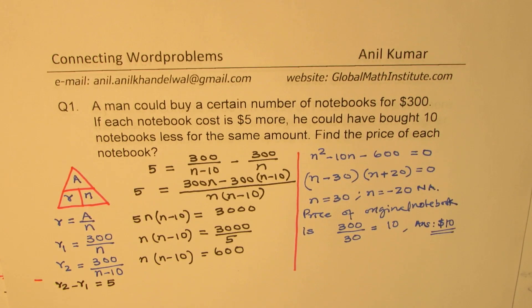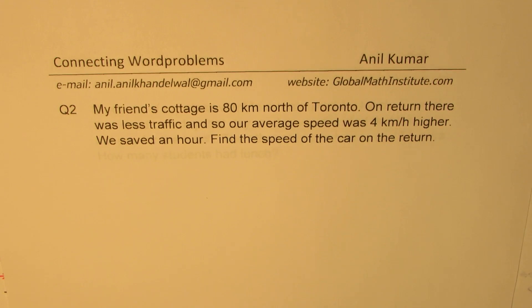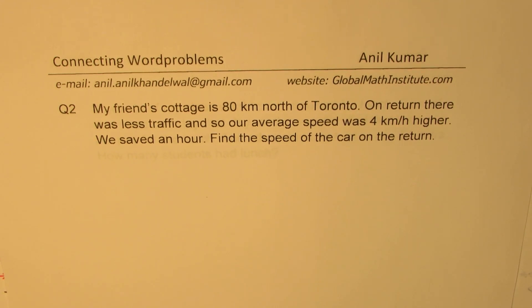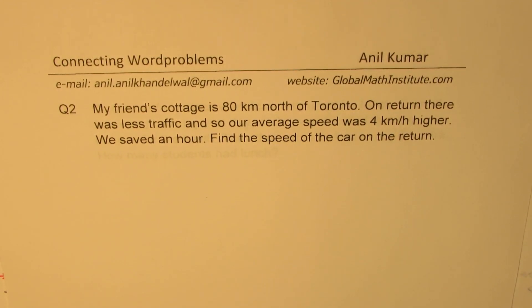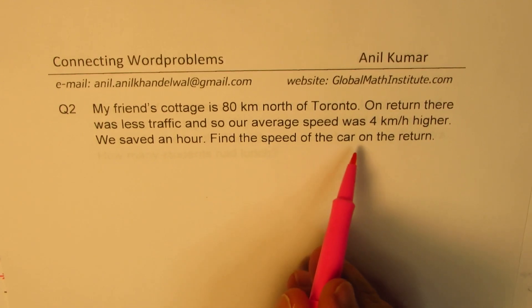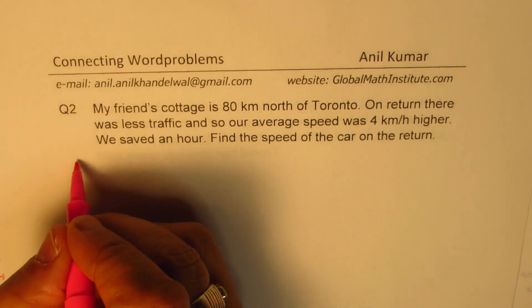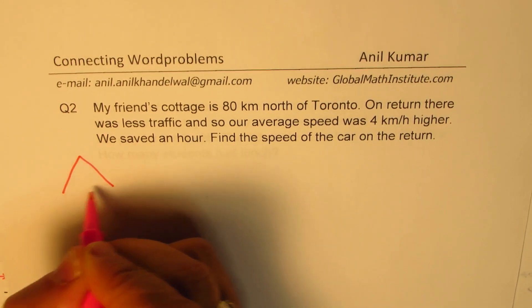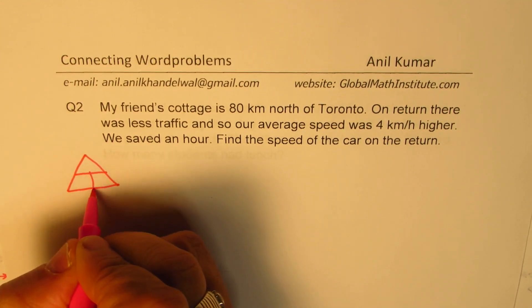Now let's take the second example: my friend's cottage is 80 kilometers north of Toronto. On return, there was less traffic and our average speed was 4 km per hour higher, and we saved an hour. For distance, speed and time problems, we use the triangle relationship: time equals distance over speed.